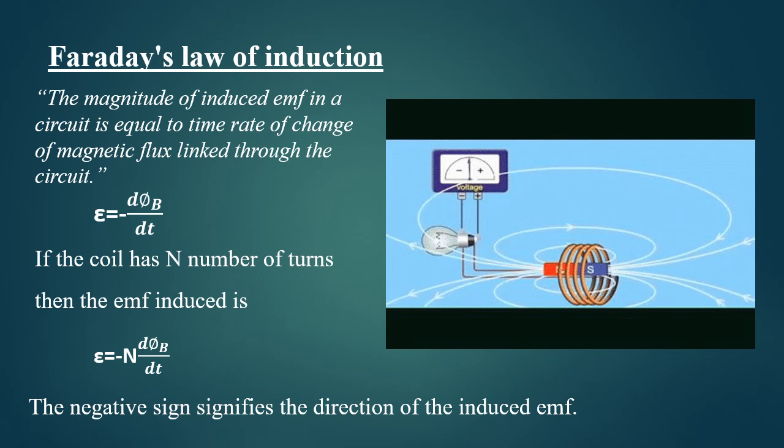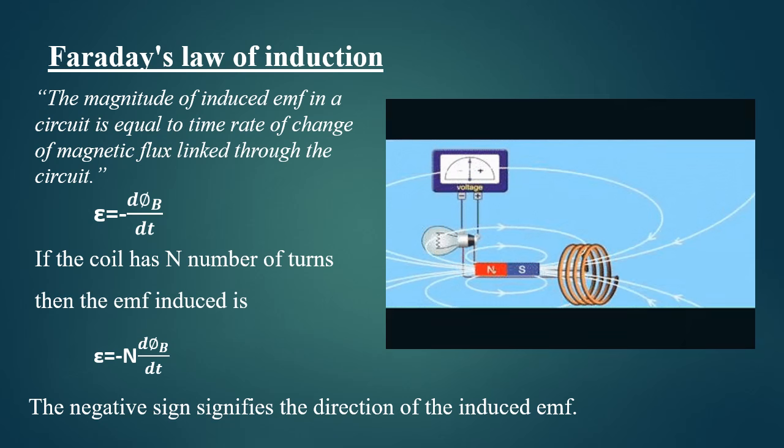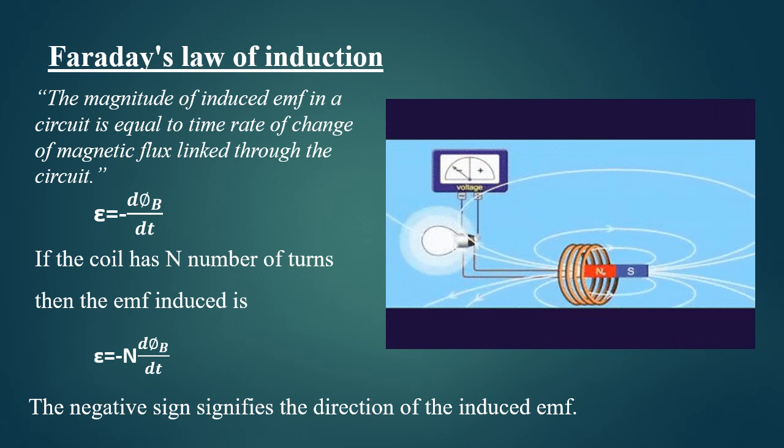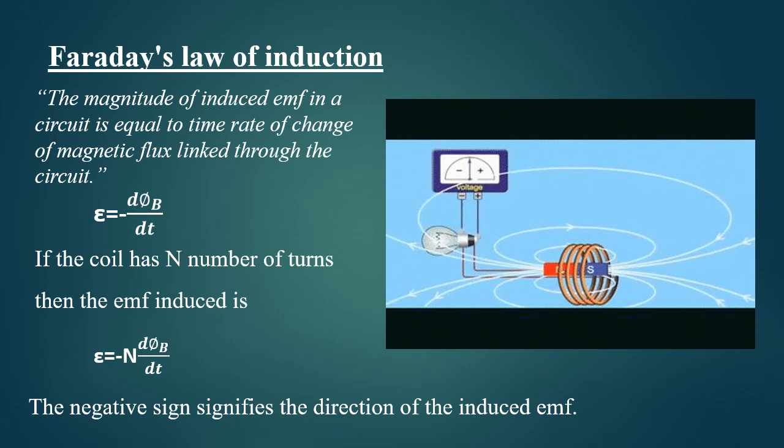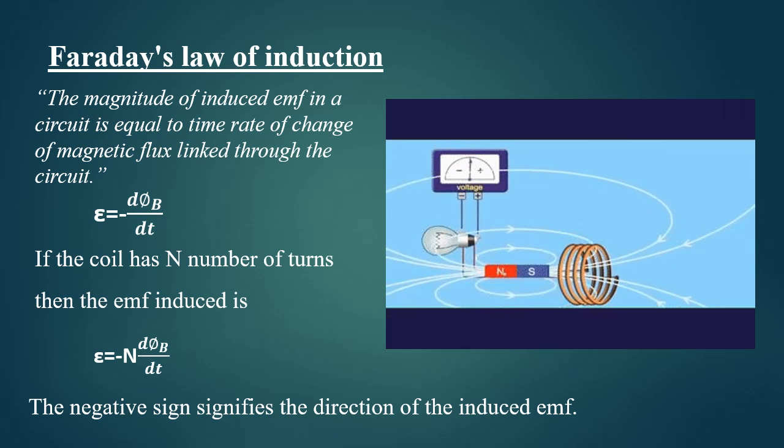The negative sign in the above equation indicates the direction of induced EMF, and hence the direction of induced current in the closed loop.